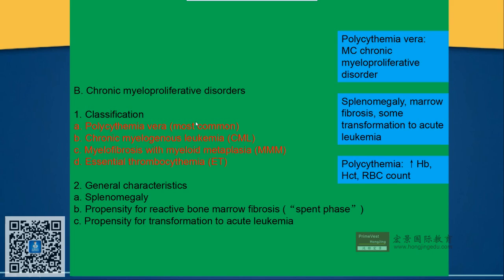We know that another name for platelet is thrombocyte. The general characteristics for all chronic myeloproliferative disorders will be splenomegaly — there is enlargement of the spleen — and there is predisposition for bone marrow fibrosis, and then transformation: the possibility that these myeloproliferative disorders, which are happening in a chronic manner, can be transformed into acute leukemia.